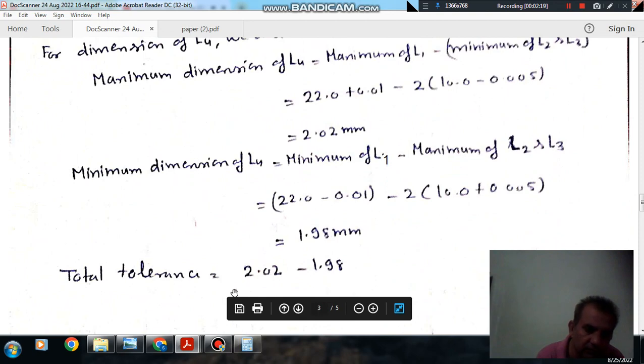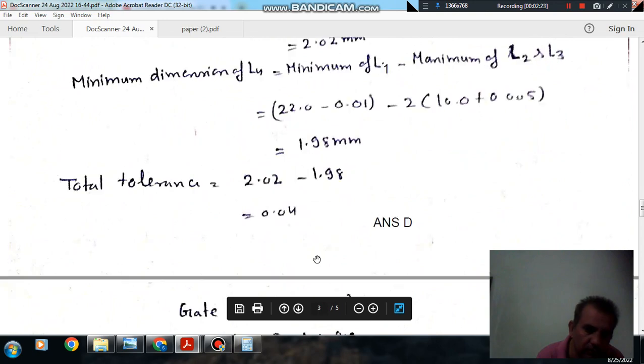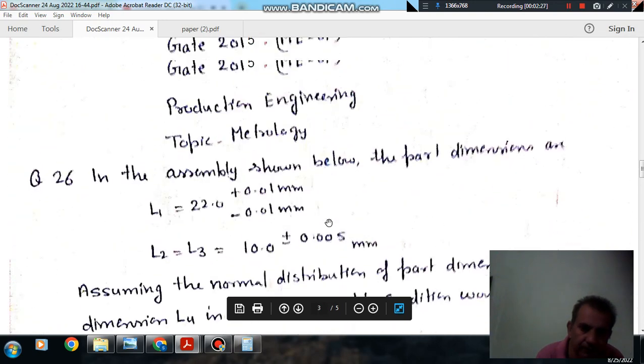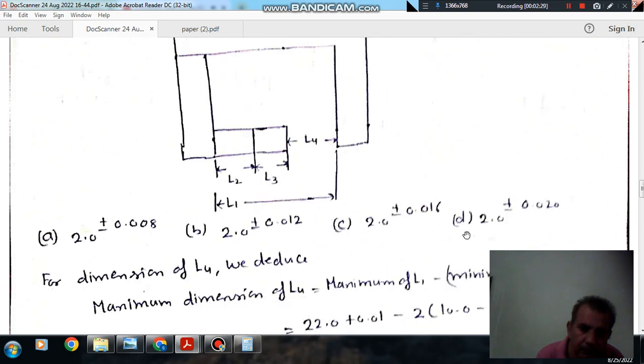So total is 2.02 minus 1.98, which is 0.04 mm. Here the answer is this. Because maximum dimension is 2.02 and minimum dimension is 1.98, the answer is Option C.